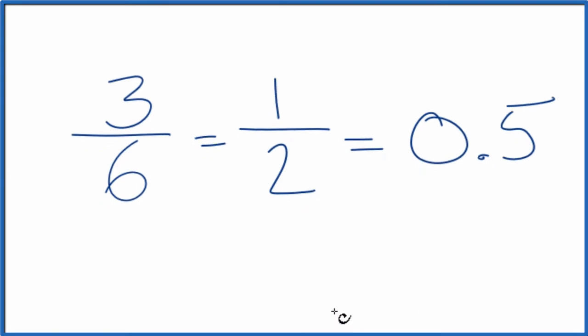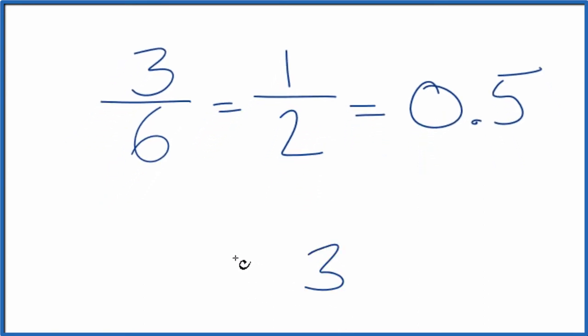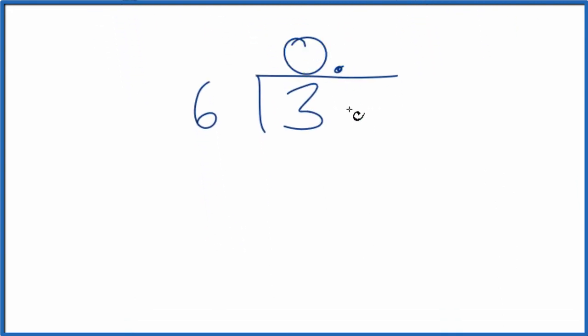We could also do this longhand. We could say we have three, and we want to know how many times six goes into three. Six doesn't go into three, so we'll put a zero here and a decimal point. Call this 30. Five times six, that's 30. We don't have any remainder here.